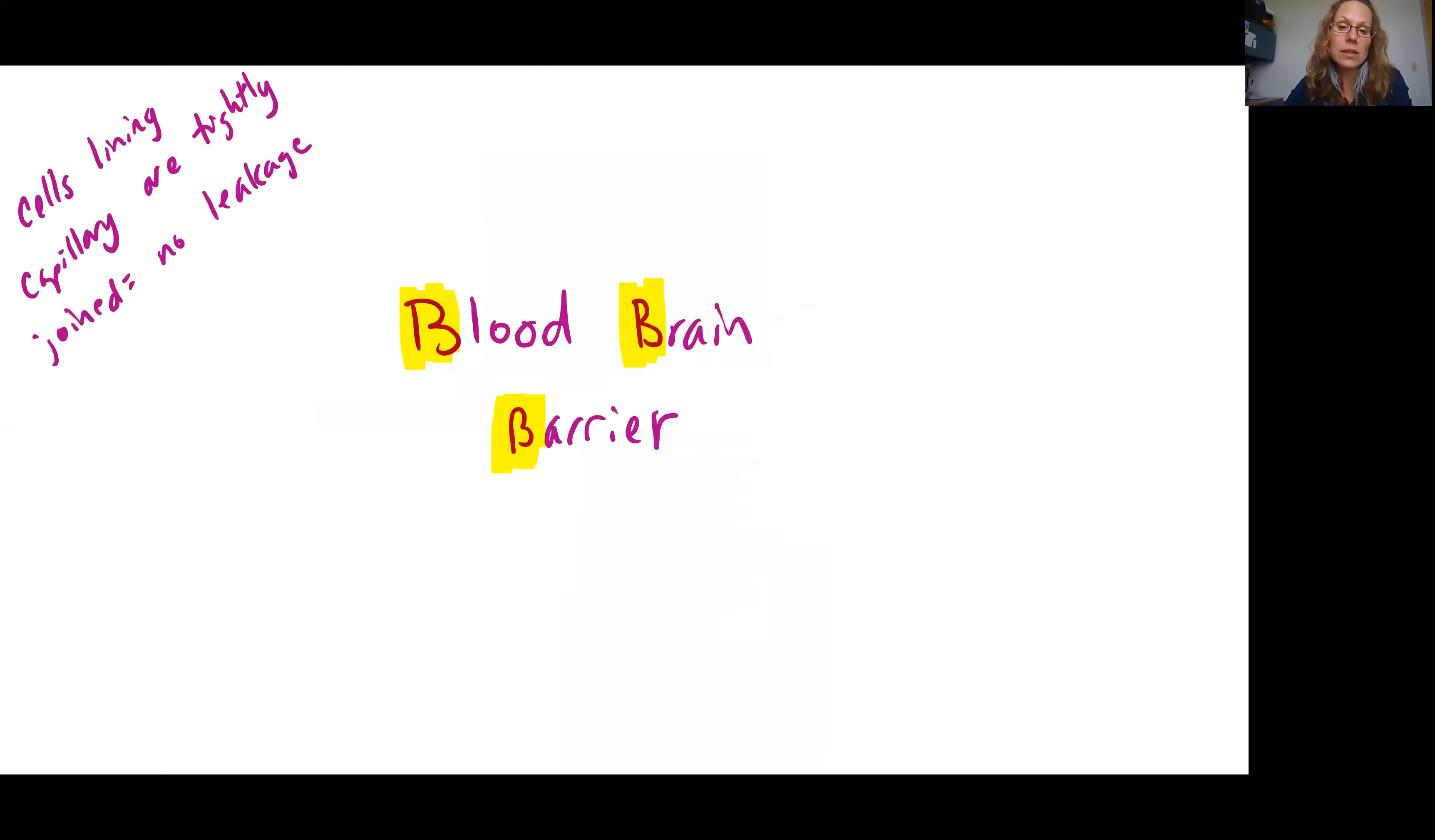Lastly let's look at the blood brain barrier which can be abbreviated BBB. The blood brain barrier is groups of cells that line the capillary causing that capillary to be tightly joined to really eliminate leakage.